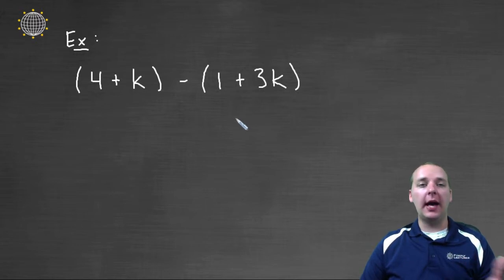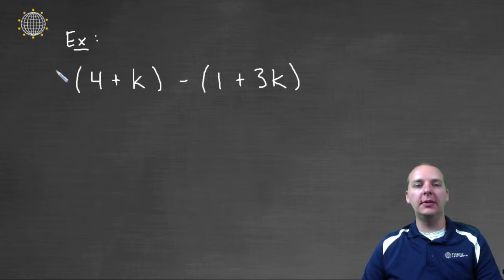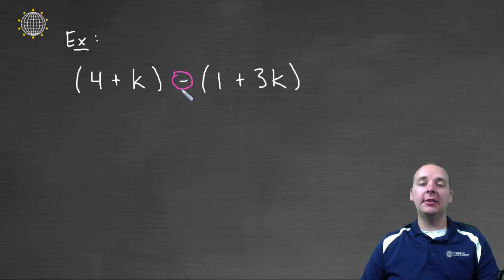Now right off the bat it doesn't appear to have a distributive property because we don't really see a clear cut number outside one of our parentheses like a three or something like that that would need to be distributed. But in fact there is, it's just a little hard to spot. This minus sign right here is actually